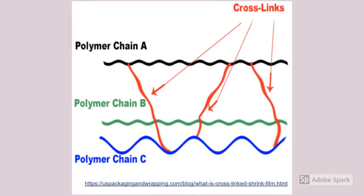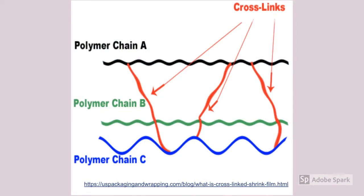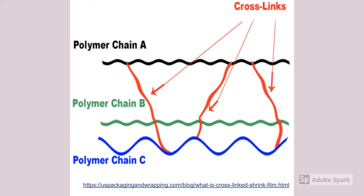Cross-linking is defined as chemically joining two or more molecules by a covalent bond. This process was introduced to reduce oxidation, which affects the wear of the implant and the immune response of your body.